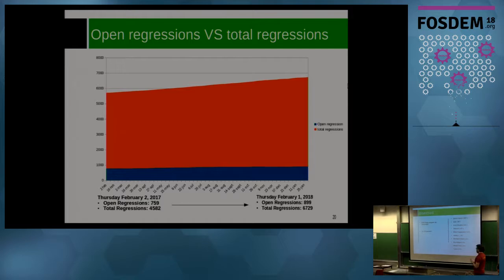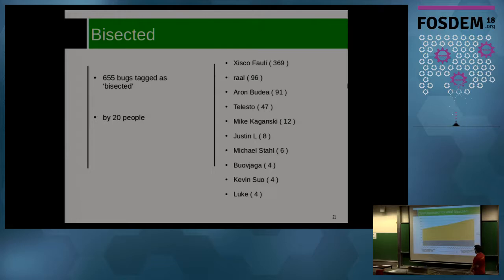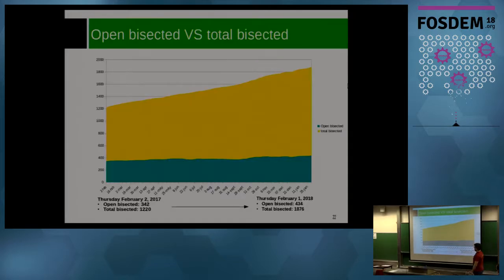Another important triaging task is bisecting bugs. Around 650 bugs were tagged as bisected during this time, done by 20 people. Similarly, the open bisected bugs are fairly flat while the total number of bisected bugs in Bugzilla is growing faster. We also have the crash or hang keyword — this was applied to 258 bugs and was done by 15 people.